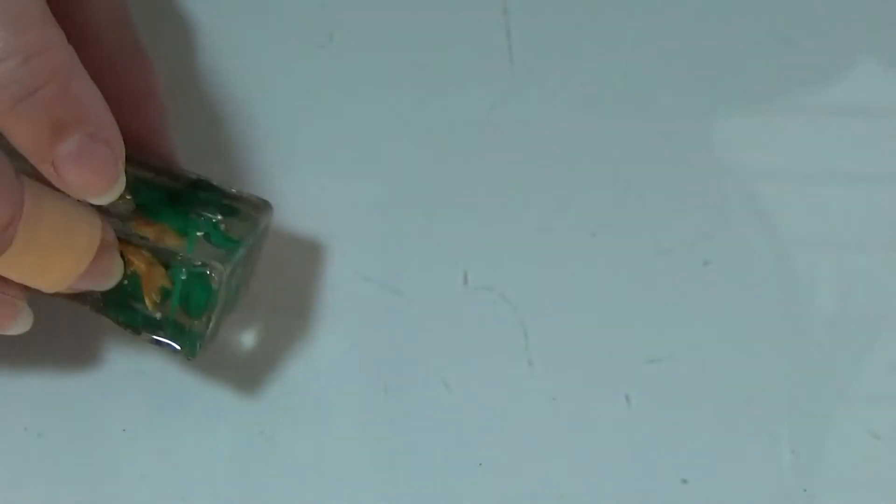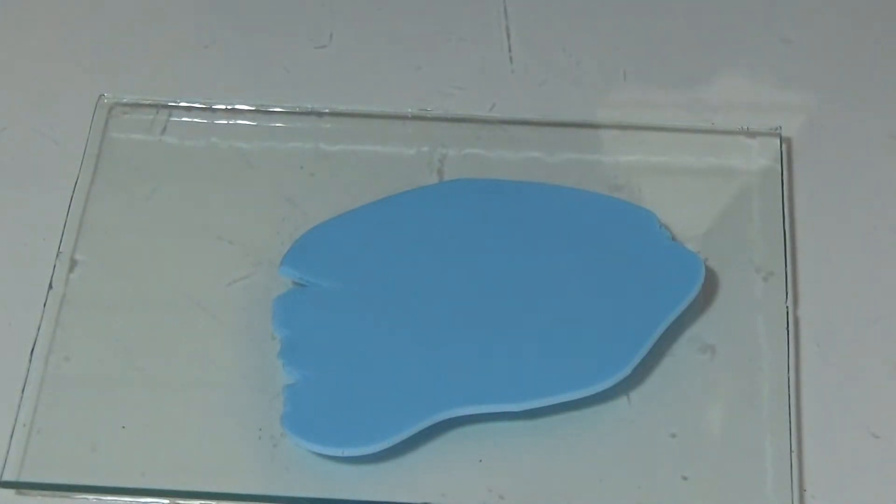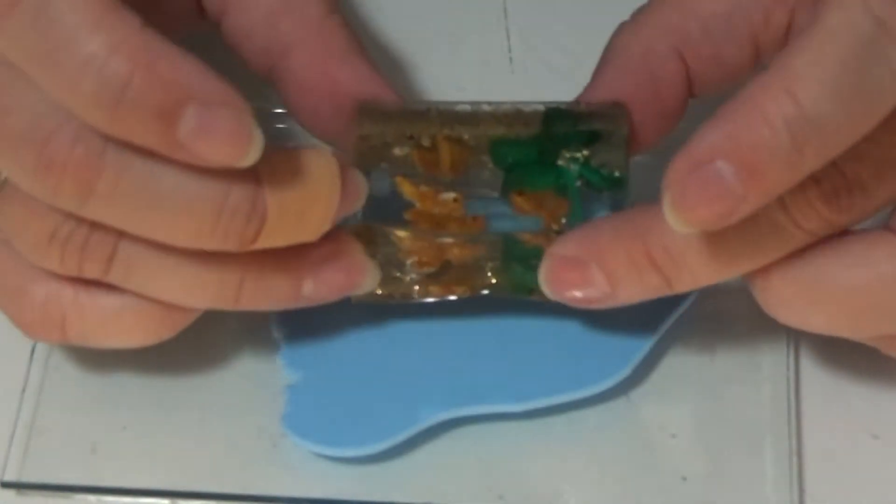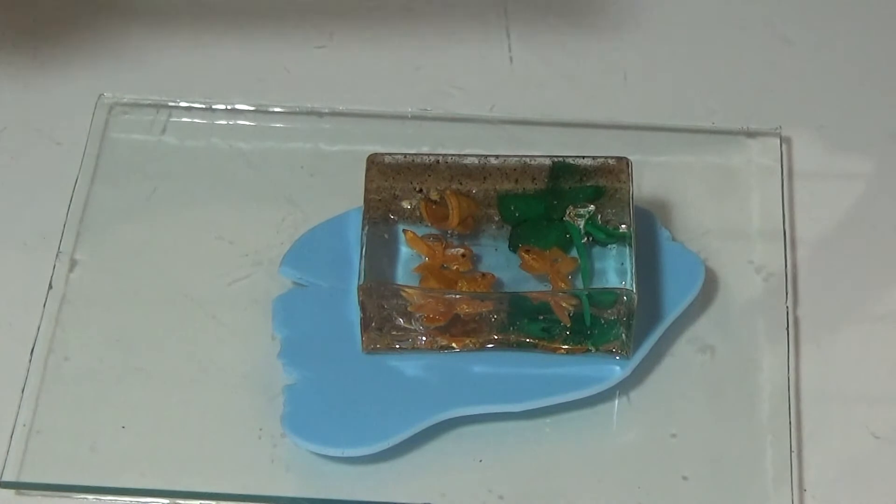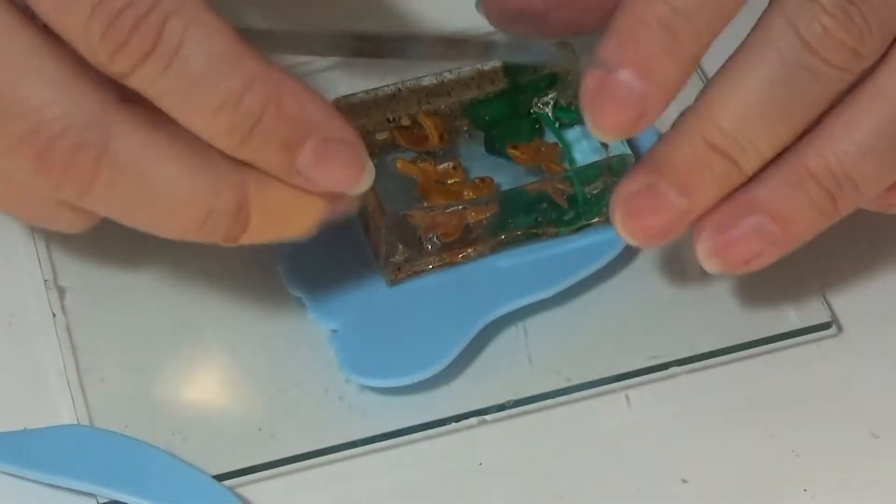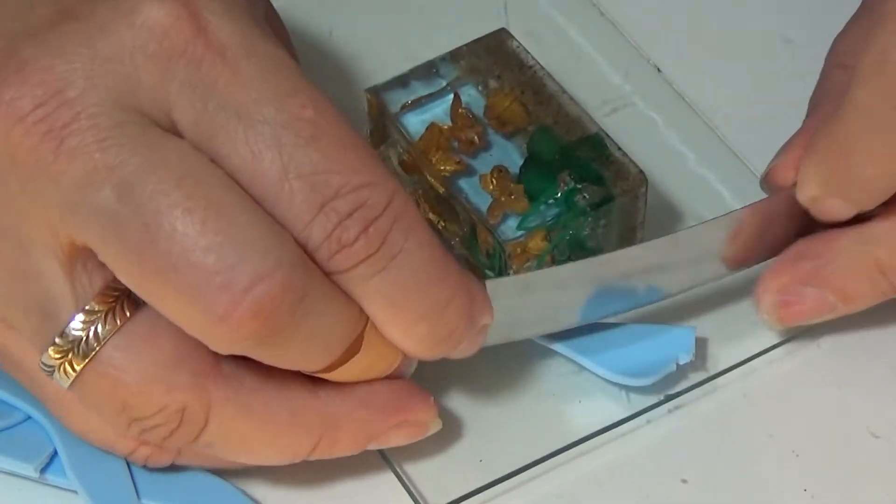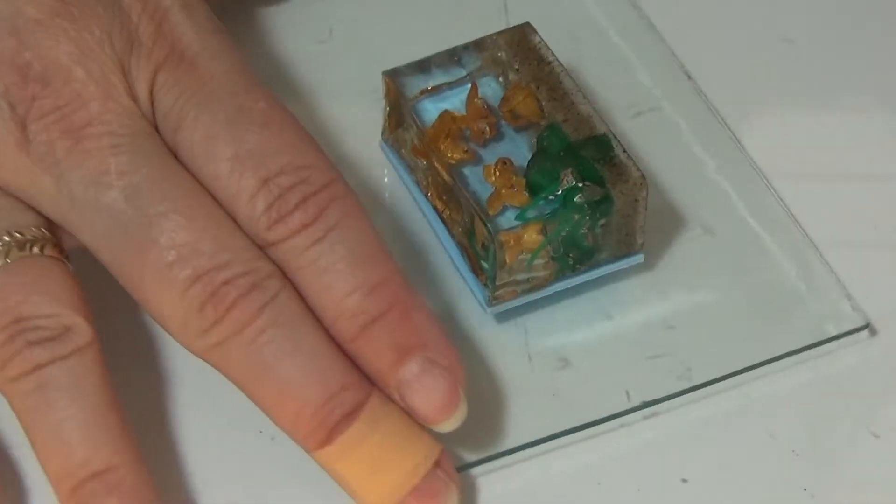So I'm going to take some clay. I rolled that out on a setting 3. And I'm going to place my fish tank on top of this clay and cut out. I believe if you don't put the backdrop in to start with like I did, you won't have the problem.